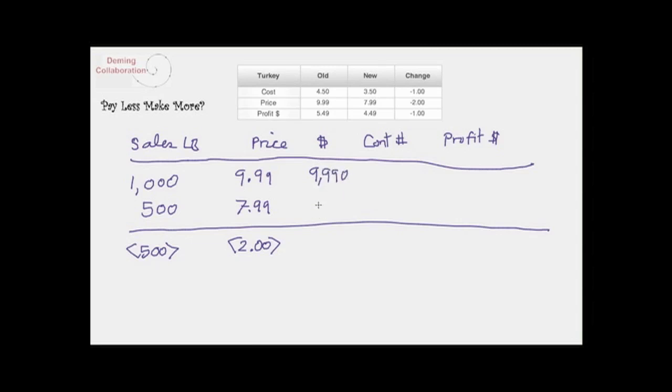But he didn't, and so his total sales dollars dropped from $9,990 - that's $9.89 times a thousand - to $3,995, or five hundred times $7.99.